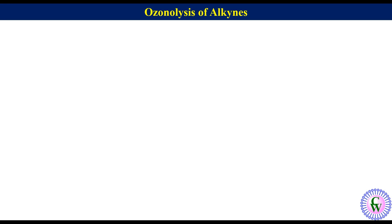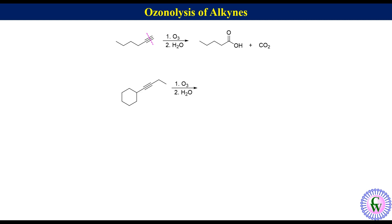Now let's go through examples. The first example is ozonolysis of hex-1-yne involving neutral workup. We have seen that under such conditions carboxylic acids are formed. Since it is a terminal alkyne, it will give carboxylic acid and carbon dioxide. To get the product structure, cut the molecule into two parts through the triple bond. Since the left part has a five-carbon chain, the product will be pentanoic acid and carbon dioxide.